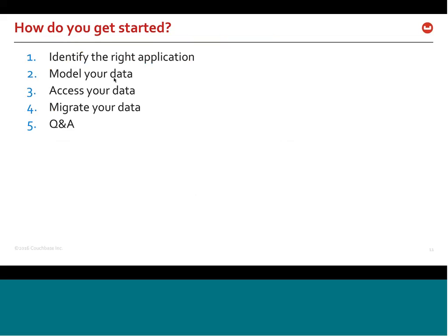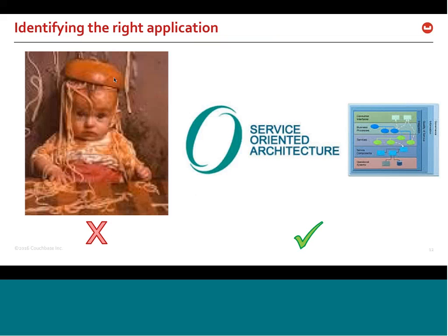So how do you get started with NoSQL? We'll talk about how to identify the right application, how to model your data, access it, and how to migrate it. In terms of identifying the right application, the best thing you can do is find applications that are service-oriented and compartmentalized so you can identify the pieces or services you want to migrate. One of the mistakes customers make is trying to renovate a legacy spaghetti code system in a six-to-nine-month project — those projects are usually doomed to failure.